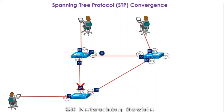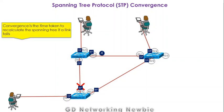Hi everyone. Today we will discuss Spanning Tree Protocol convergence — specifically, what convergence is. Convergence is the time taken to recalculate the spanning tree if a link fails, or if any of the switches in the spanning tree fail. We have discussed how the spanning tree is established using the STP algorithm. Today we will specifically discuss what happens if some switches or links between switches fail.